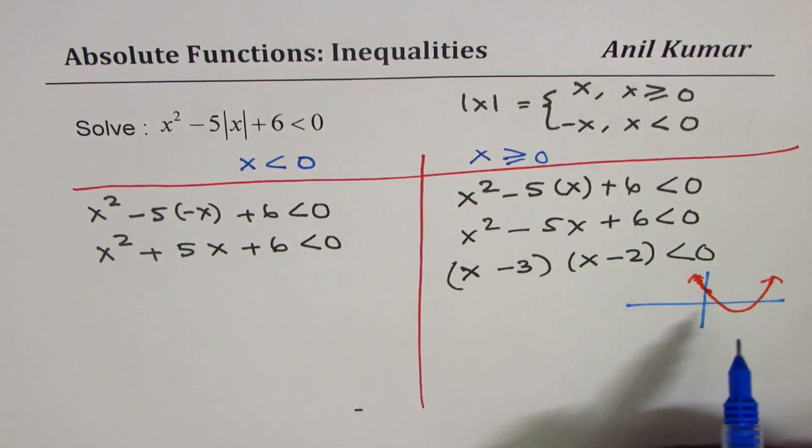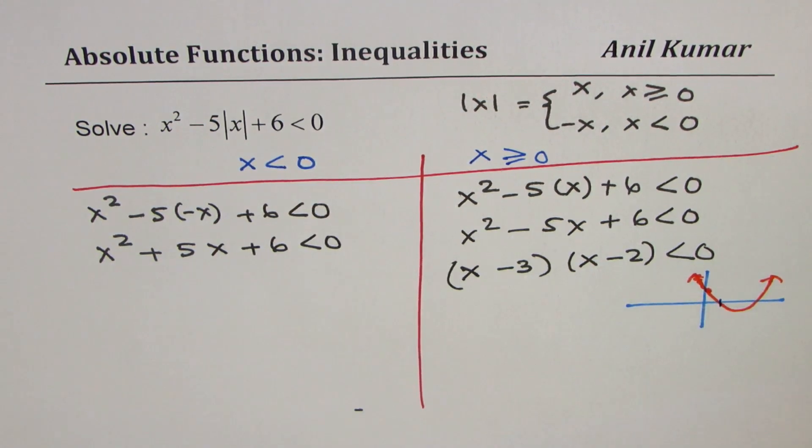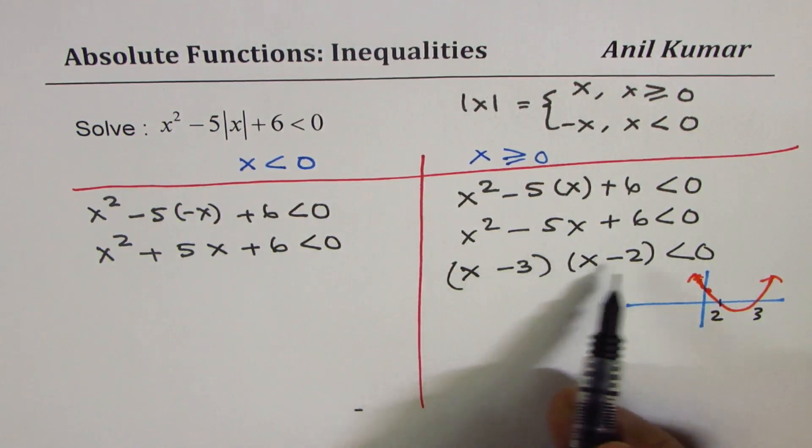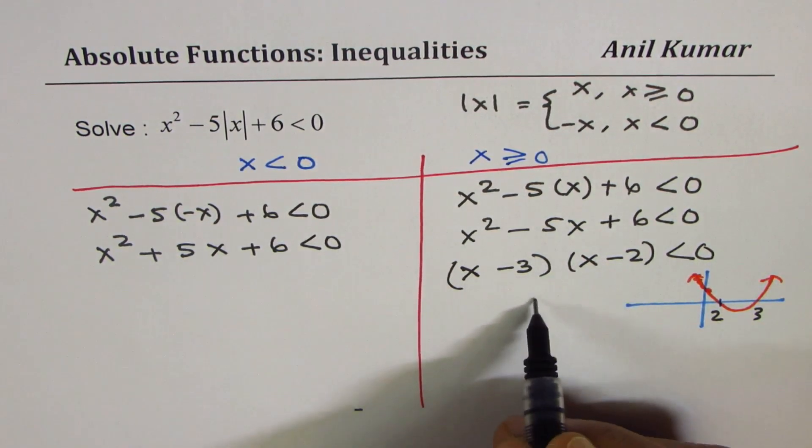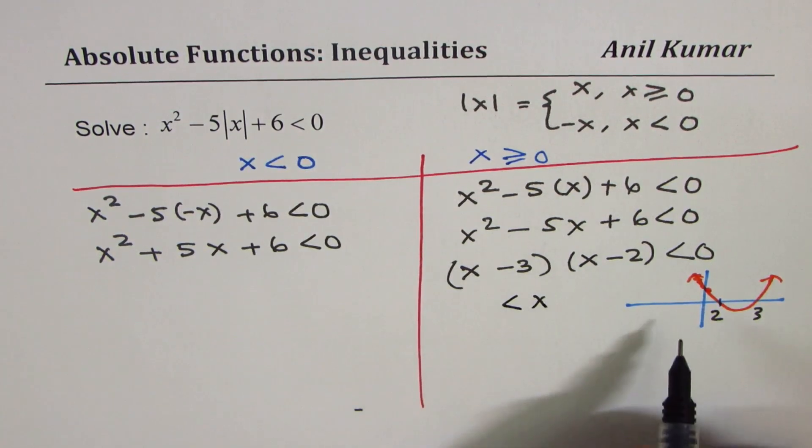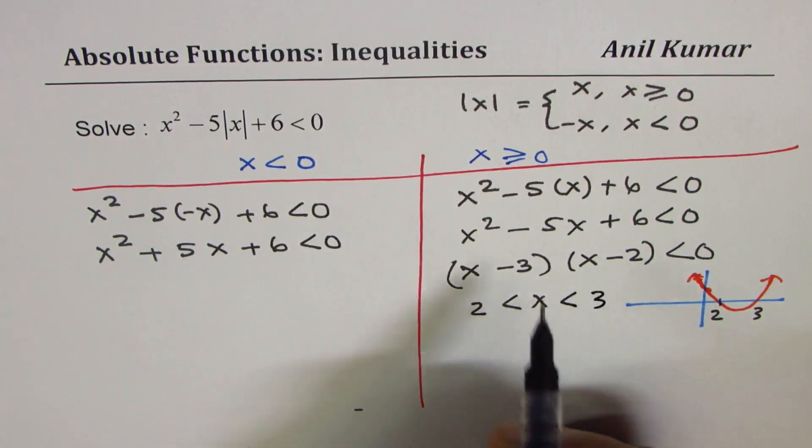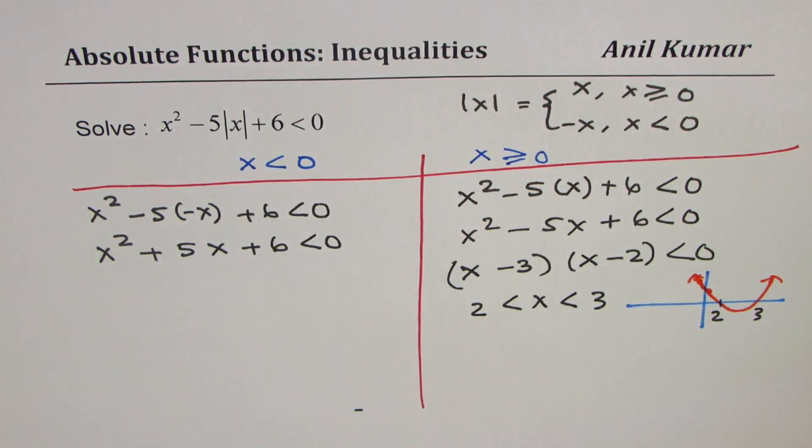We're looking into positive negative parts. What we can conclude from here is that x is between 2 and 3 for the quadratic function to be less than zero. That gives you the value of x between 2 and 3 when x is greater than equal to 0.